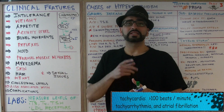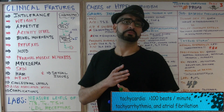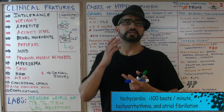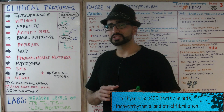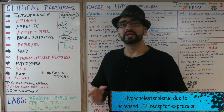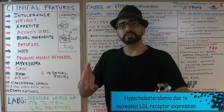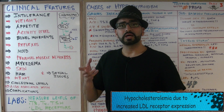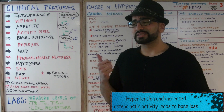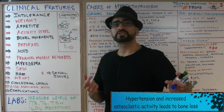Remember that pretibial myxedema and periorbital myxedema are skin findings. The skin itself is warm and moist, and the hair is thin. For the heart, think tachycardia — heart rate above 100 beats per minute — as well as tachyarrhythmias; the patient may even have atrial fibrillation. LDL receptors are highly expressed, so cholesterol levels are decreased, presenting as hypocholesterolemia. Also associated with high blood pressure and bone loss due to increased osteoclastic activity.